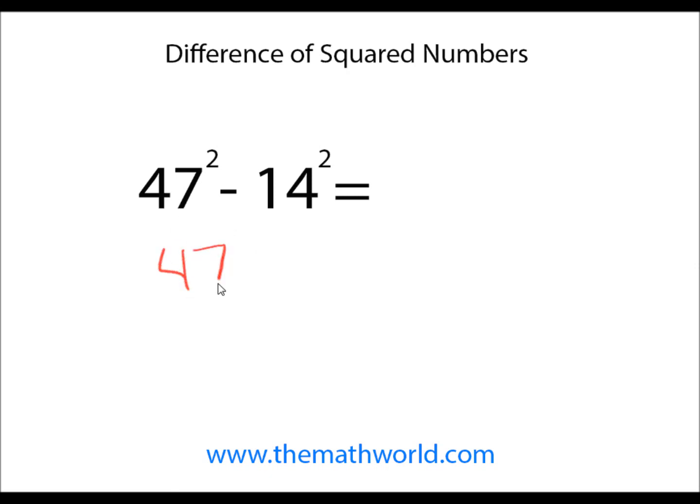But we'll take 47, we'll add 14 to it. That's going to give us 61. And then we're going to subtract these numbers. So 47 minus 14 is 33.